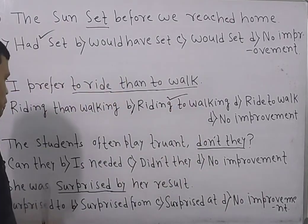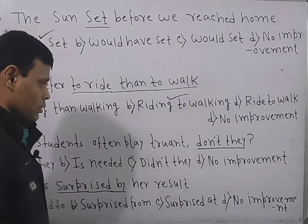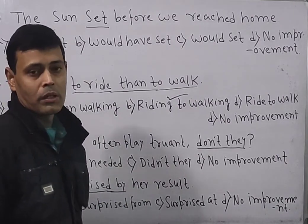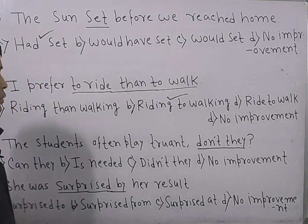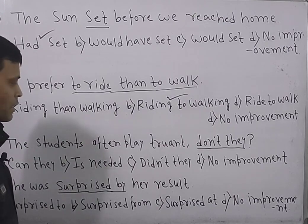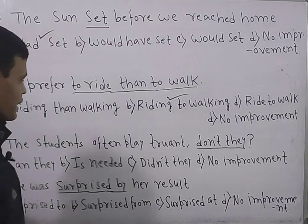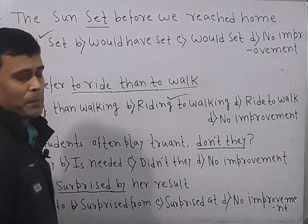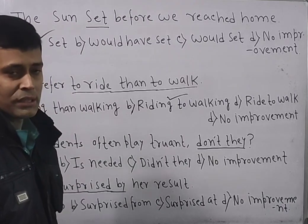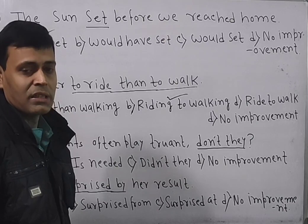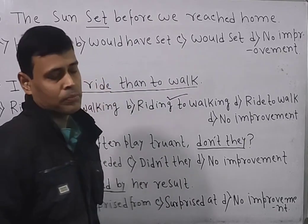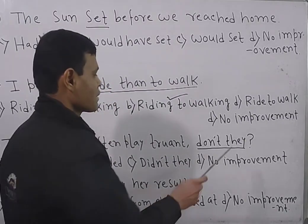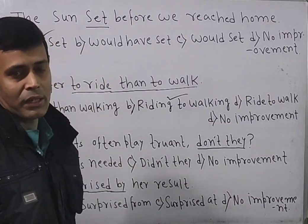Now go next. 'The students often play truant.' Truant means to often escape school, or to take French leave. This question is all about question tagging. The options are: don't they, can they, is needed, didn't they, or no improvement. The sentence belongs to the simple present tense, so while asking the question tag, 'do' or 'does' is used as the auxiliary verb. Here, 'don't' is used — it is the abbreviated form of 'do not' — against the subject 'they.' So it is quite correct. No improvement is needed.